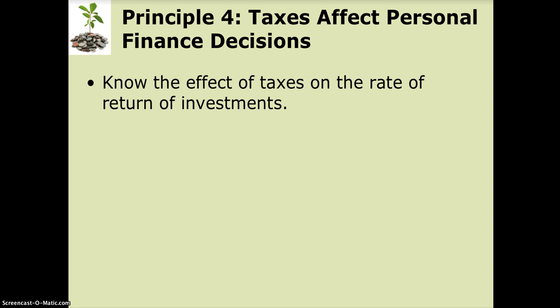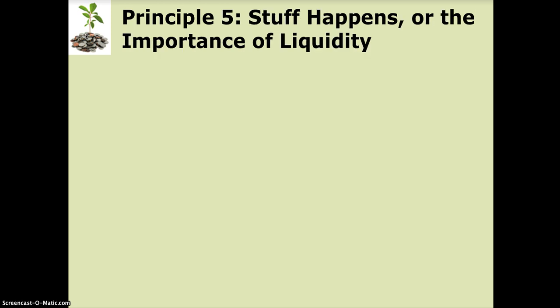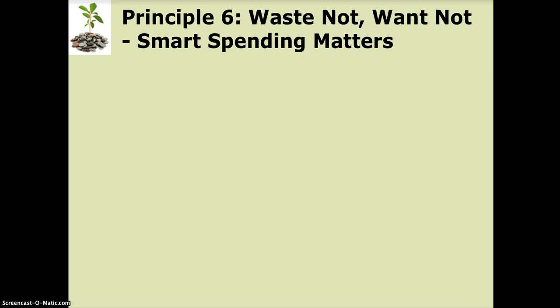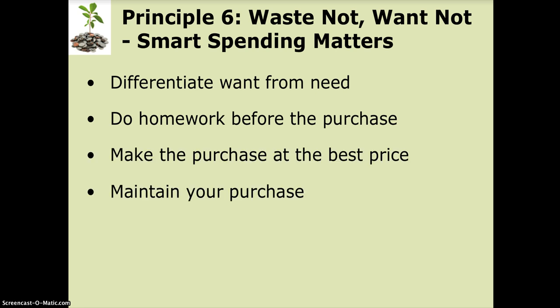Principle four: taxes affect your personal financial decisions. You have to know what type of investments you're making and always be alert to your tax obligations and the process involved in filing taxes. Principle five is that stuff just happens from time to time, so you have to be prepared for those things when they occur. Principle six is waste not, want not — basically, live within your means. Understand that things you want aren't necessarily needs. A need is something you have to have; a want is something you'd like to have. Balancing those two worlds is critical to executing a sound financial plan.